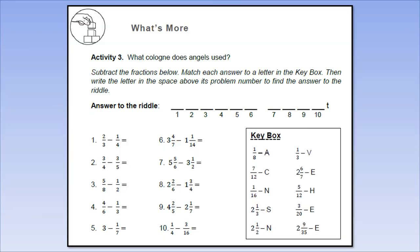For activity number 3, you're going to answer what cologne does angels use. To answer what cologne the angels use, you need to answer the riddle with numbers and the corresponding answer has a letter. For example, number 1: 2/3 minus 1/4. Let's say the answer is 7/12. Find it in the key box, and 7/12 is letter C. This letter C, write it in the blank above number 1 to form the words that will answer the riddle about what cologne angels use. There are 10 items. Find all your answers and put the letter in the corresponding number at the top.